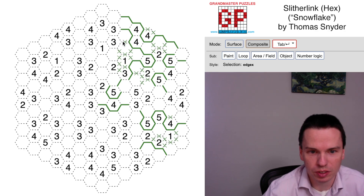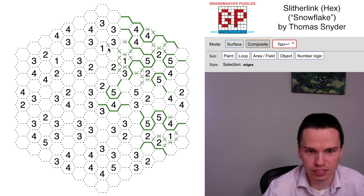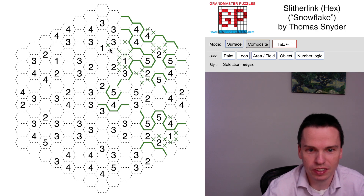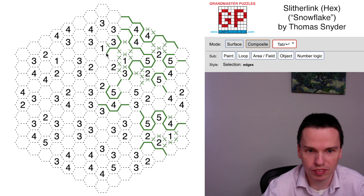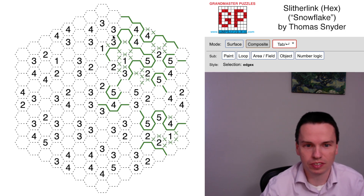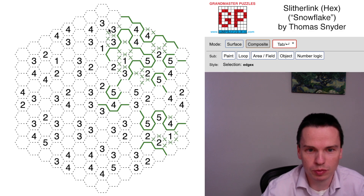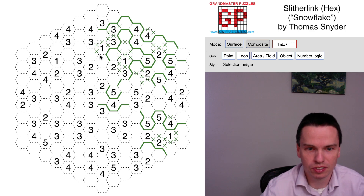We've got some additional tension now with this 1-3 pair. We're not going to take this edge of the 1 because then the 3 has to come this way and has nowhere to turn out from this cell. So instead we've got 3 cells we can take around the 3, or these 2 which are option on and off. The set of 3 together is what we always have to take. That puts this in, it closes this off, it closes out these edges, which means we have to take these 2 edges.